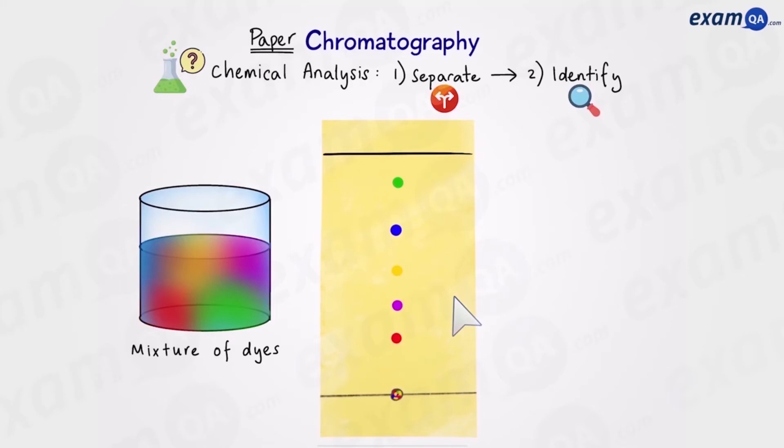Okay, now what we've produced is called a chromatogram. And you can see that there are five spots in our chromatogram indicating there must be five dyes in the mixture. So we've done the first part of chromatography where we have to separate the dyes. Now we're going to move on to the second part which is to identify what the spots mean.